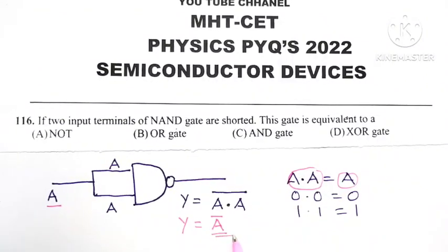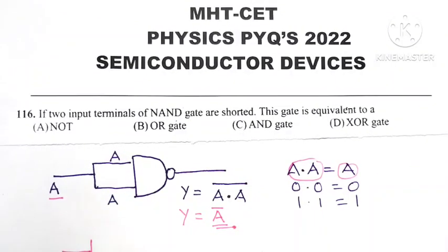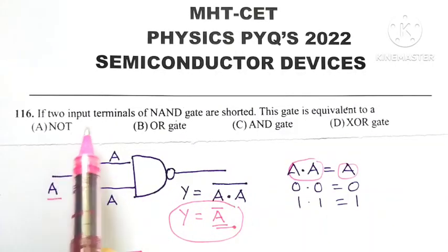So whenever input terminals of NAND gate are shorted, then the output of that circuit is a complement of its input. And we know this is the characteristic or property of a NOT gate, that whenever input of NOT gate is A, output is A bar.